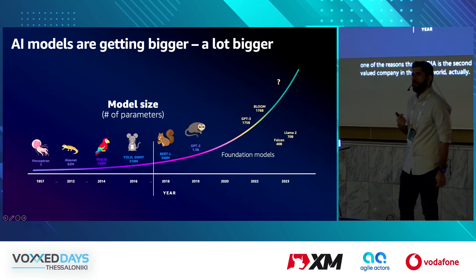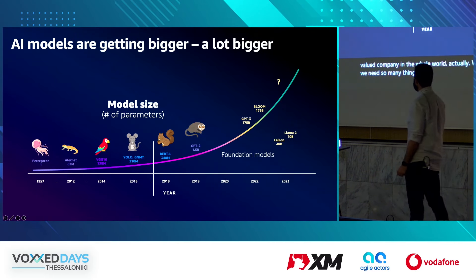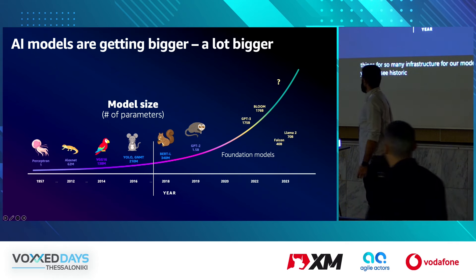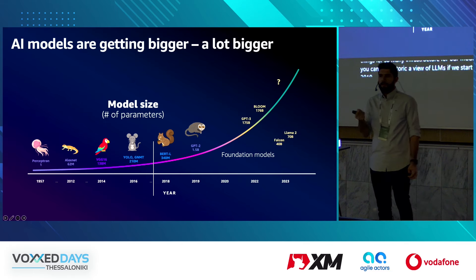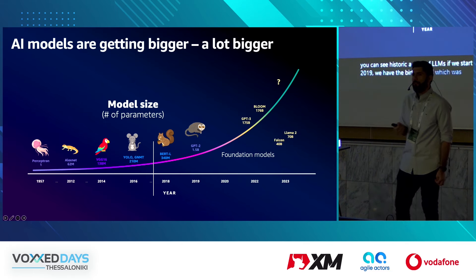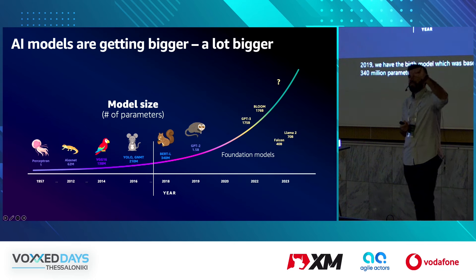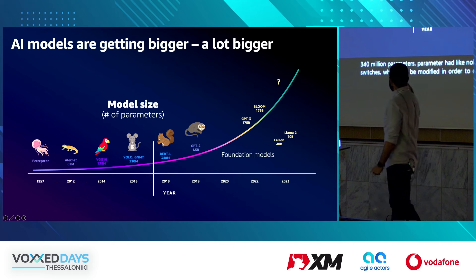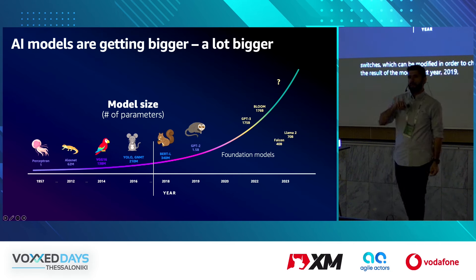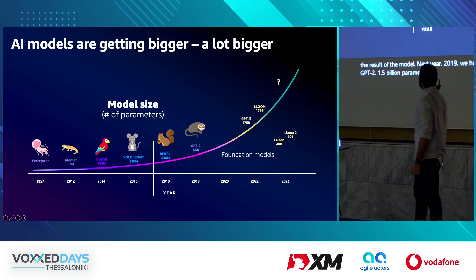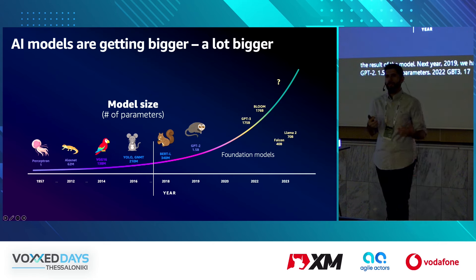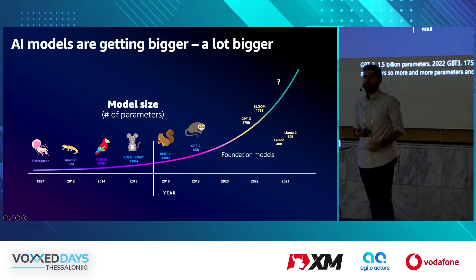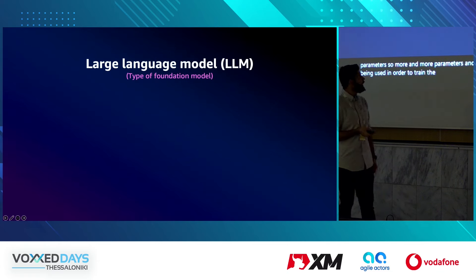Why do we need so much infrastructure for these models? Looking at a historical view of LLMs: in 2019 we had the BERT model based on 340 million parameters — parameters are like knobs and switches that can be modified to change the model's result. The next year we had GPT-2 with 1.5 billion parameters. In 2022, GPT-3 with 175 billion parameters. More and more parameters and data are being used to train foundation models.